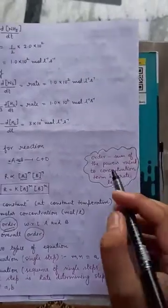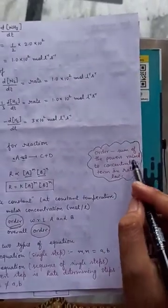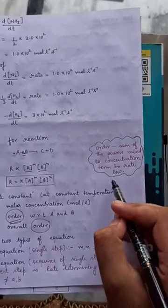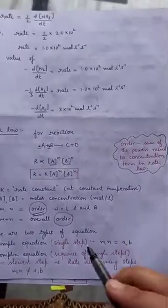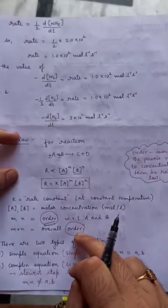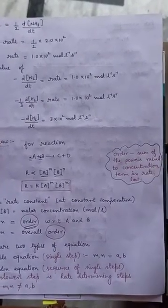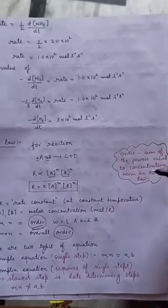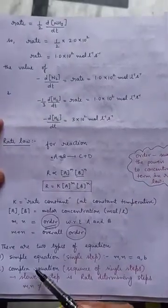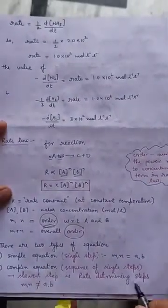Order can be defined as sum of the powers raised to the concentration term in rate law. When we discuss order, we should know the complexity of a reaction, whether the reaction is simple or complex. There are two types of equations: simple equation and complex equation.